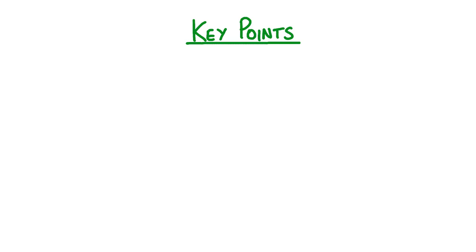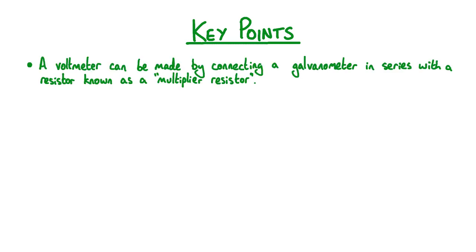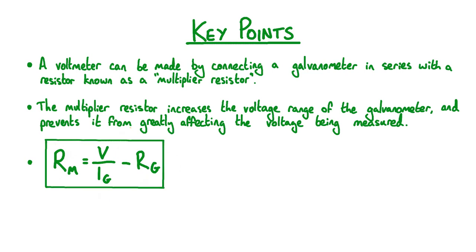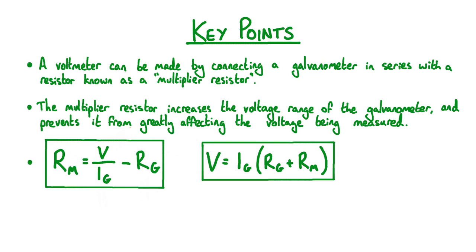Let's finish by recapping the key points. A voltmeter can be made by connecting a galvanometer in series with a multiplier resistor. The multiplier resistor increases the voltage range of the galvanometer and prevents it from greatly affecting the voltage being measured. To build a voltmeter with voltage range V using a galvanometer with resistance Rg and full deflection current Ig, the required resistance Rm of the multiplier resistor is given by Rm equals V over Ig minus Rg. We can rearrange this expression as V equals Ig times (Rm plus Rg) to calculate the voltage range of a voltmeter.